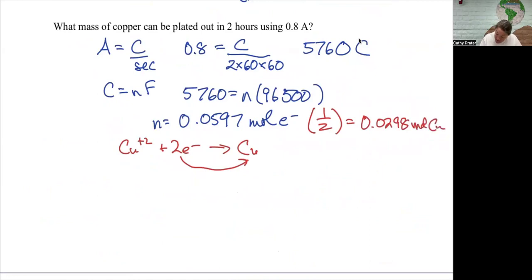And I want the grams of copper. Times 63.5. Giving me about 1.9 grams.